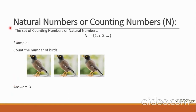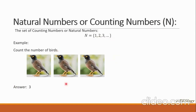The first group is what we call natural numbers, or sometimes called counting numbers. This is denoted by capital N. The set of counting numbers starts with 1, 2, 3, so on and so forth. If we're going to count the number of birds on our screen, we will count from 1, 2, 3, and we say there are 3 birds on screen.